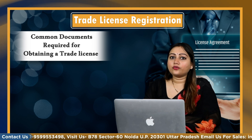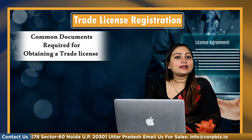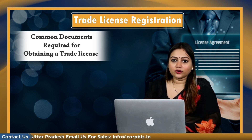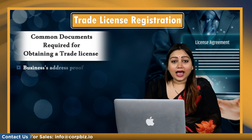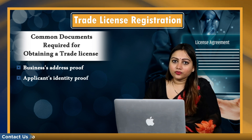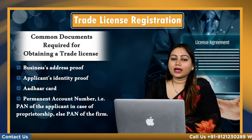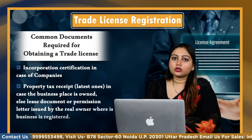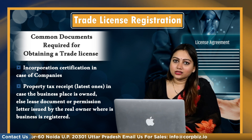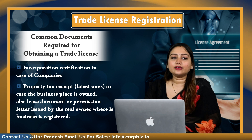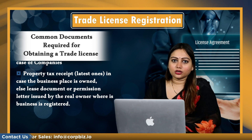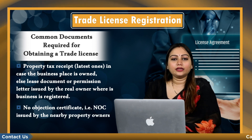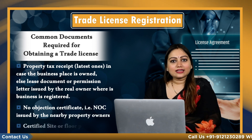Common documents required for obtaining a trade license: business address proof; applicant's identity proof, that is Aadhaar card; PAN number of the applicant in case of proprietorship, else PAN of the firm; certificate of incorporation in case of a company; property tax receipt (latest) in case the business place is owned, else a lease document or permission letter issued by the real owner where the business is registered; no objection certificate (NOC) issued by the nearby property owners; and a certified site or floor plan.